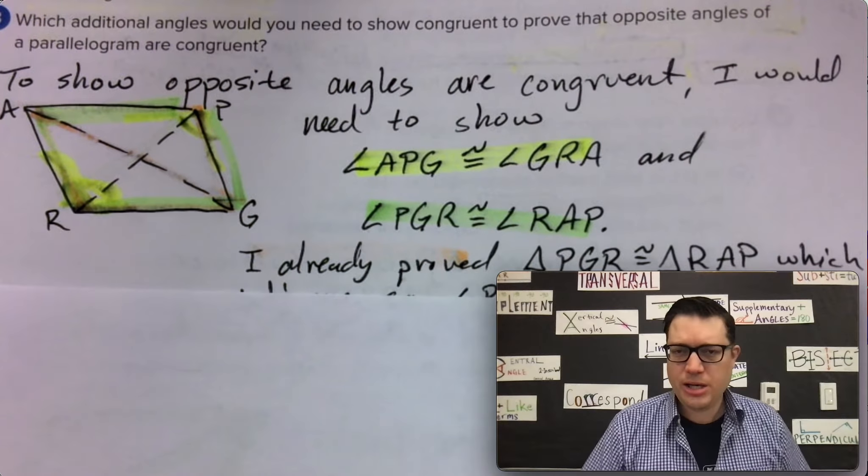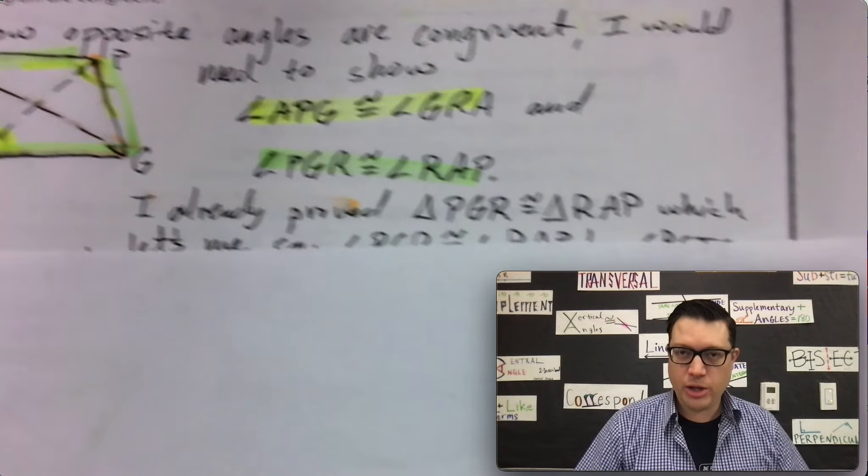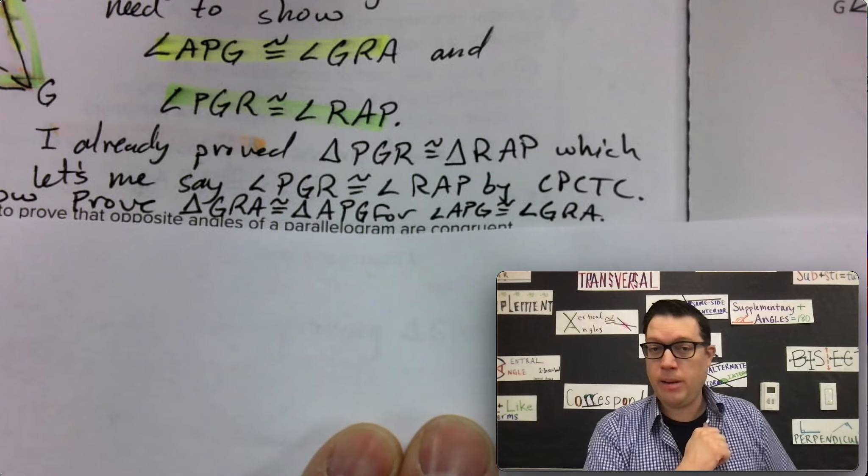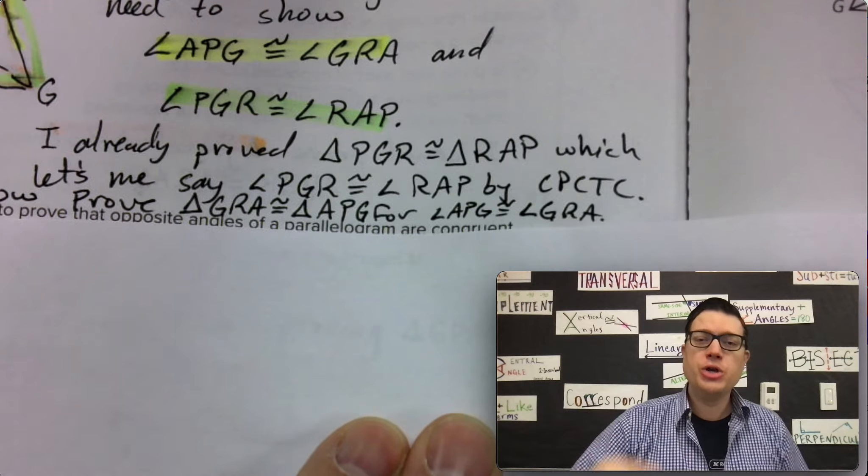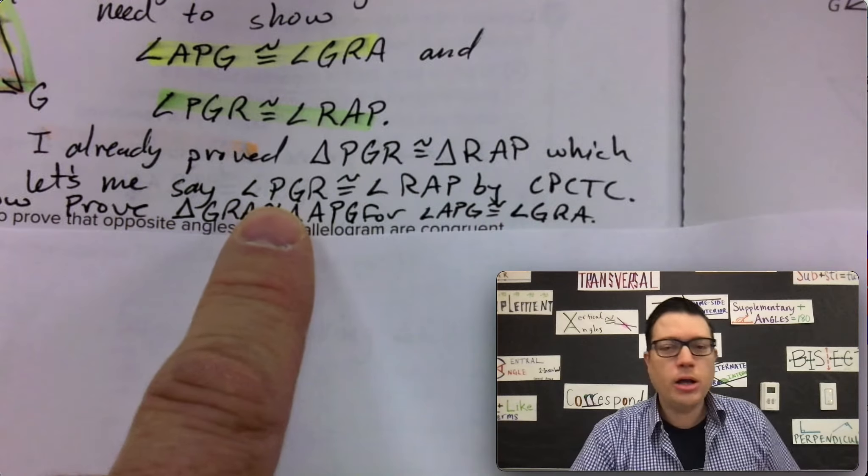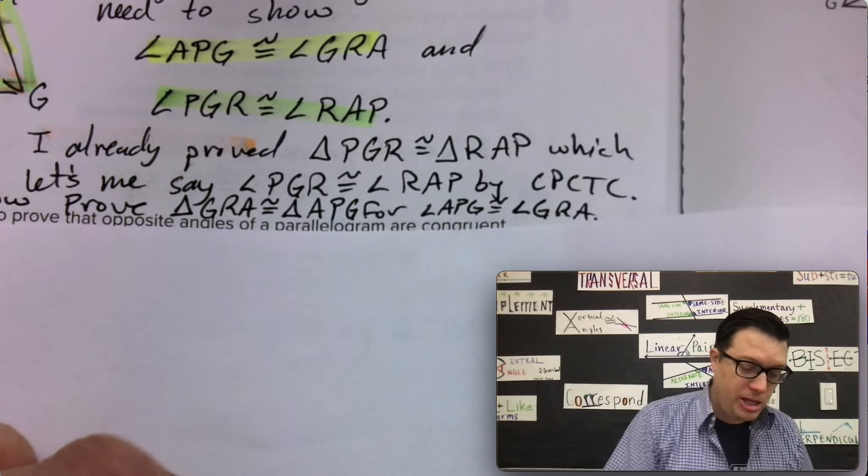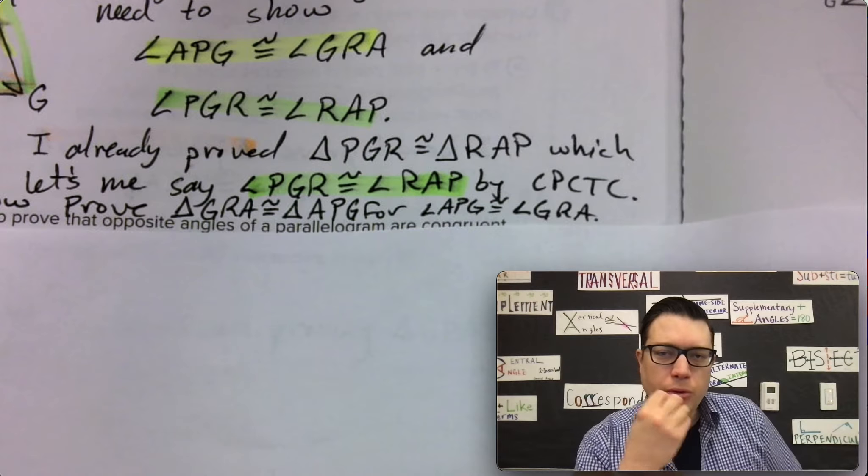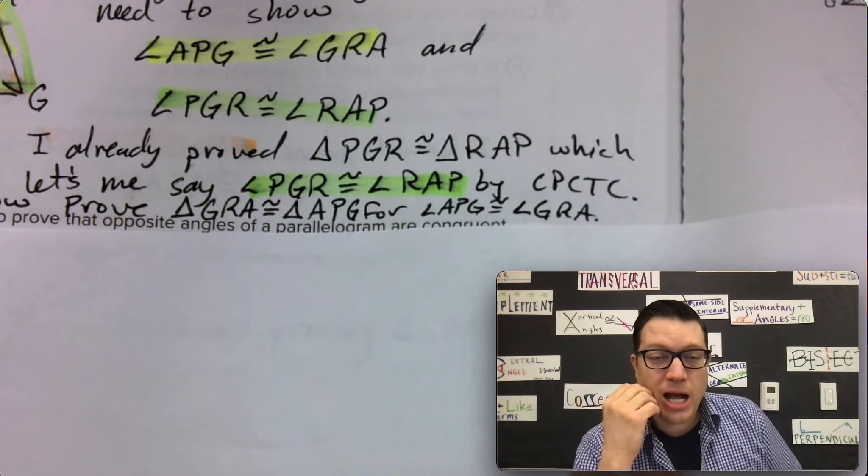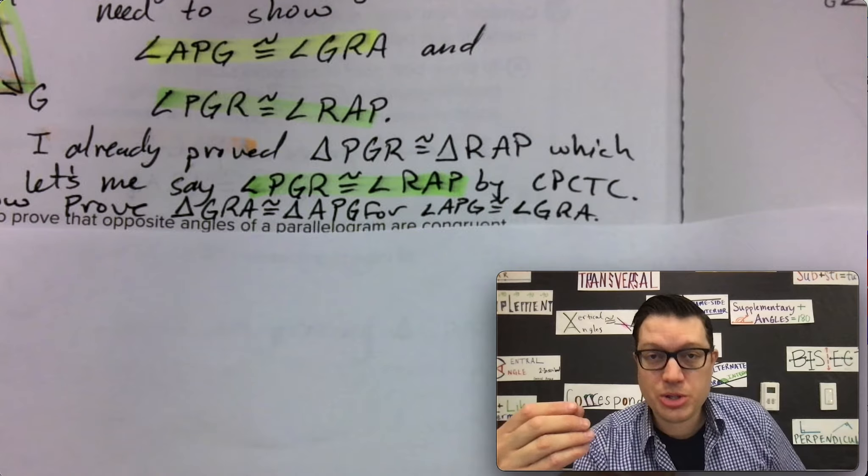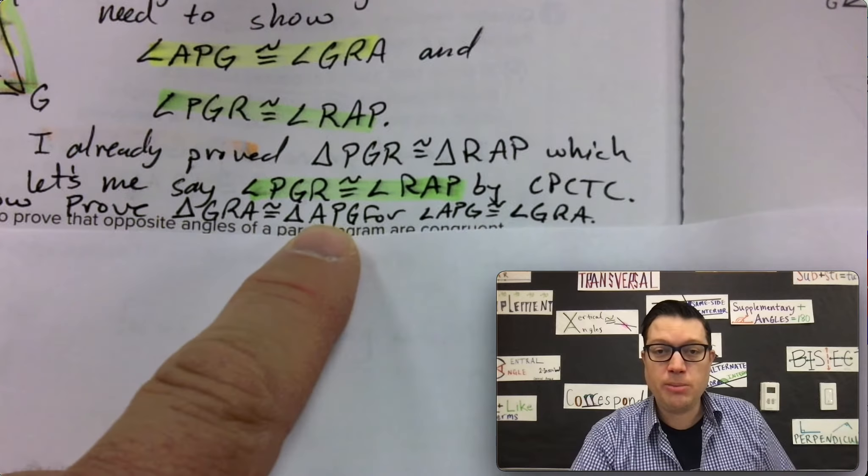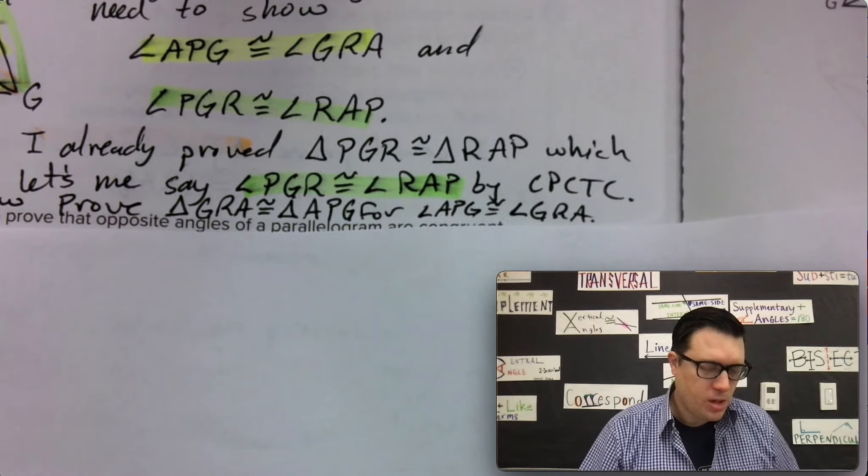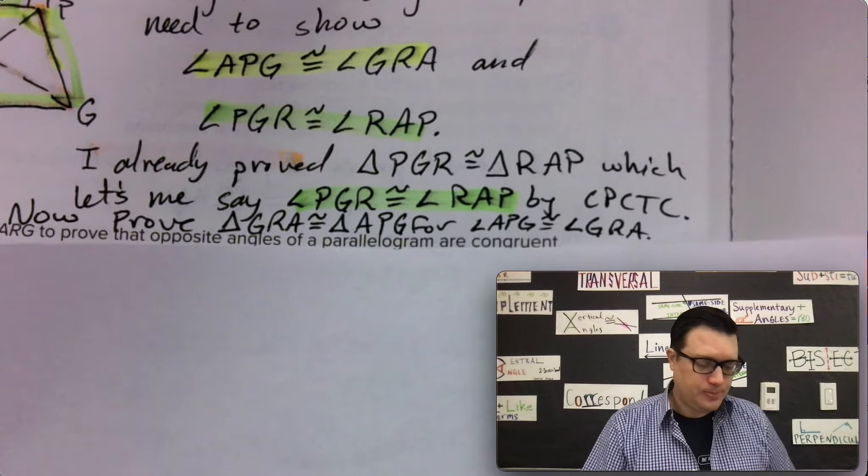We've already done this in page 401 notes. So if you haven't seen that video, go back and watch it. We already proved that triangle PGR is congruent to triangle RAP. That's the two column proof on the previous page. So that means that we get angle PGR and angle RAP are congruent by corresponding parts of congruent triangles being congruent. However, to prove the other pair of angles, we need to actually prove that the triangles they're associated with, triangle GRA and triangle APG, that those are actually congruent first, just like we did in the previous one.